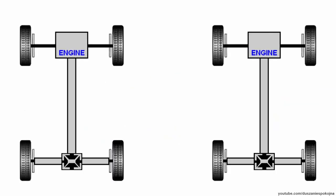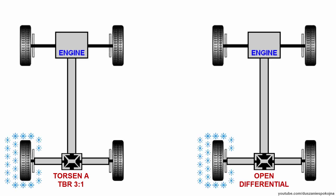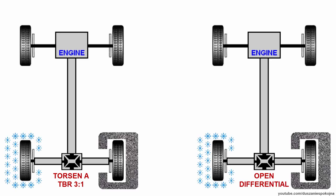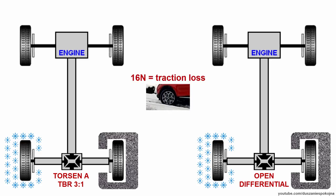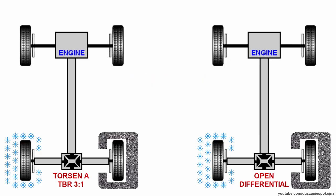Imagine two rear wheel drive cars — on the left with Torsen and on the right with open diff. One rear wheel is on snow, another on tarmac. The maximum force that the wheel on snow may apply to the ground without losing traction is 15 N. If you apply 16, the wheel will slip. So let's start.